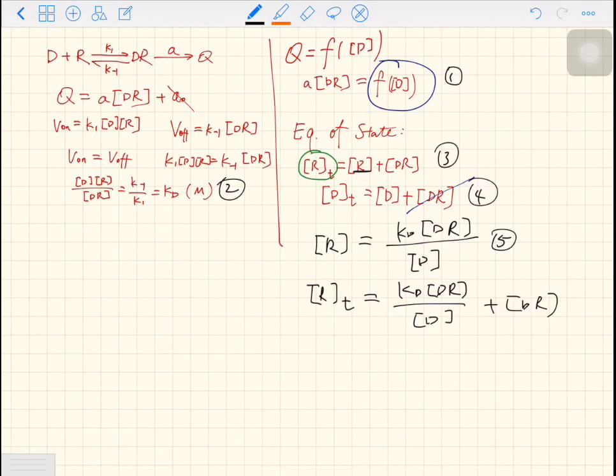So on the right side of this new equation, we have DR in both terms. Let's isolate DR. We have RT equals DR times KD over D plus one. Look at this equation.